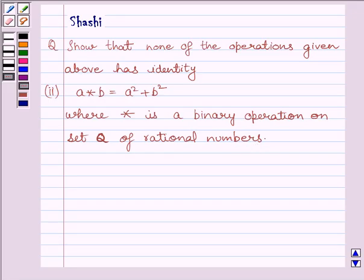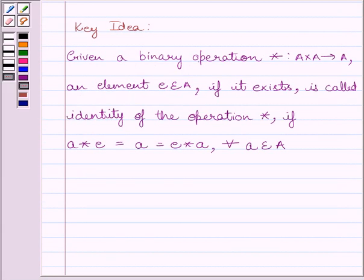First of all, let us understand the key idea to solve the given question. We know, given a binary operation star from A cross A to A, an element e belonging to A, if it exists, is called identity of the operation star if a star e equals a equals e star a for every a belonging to set A.